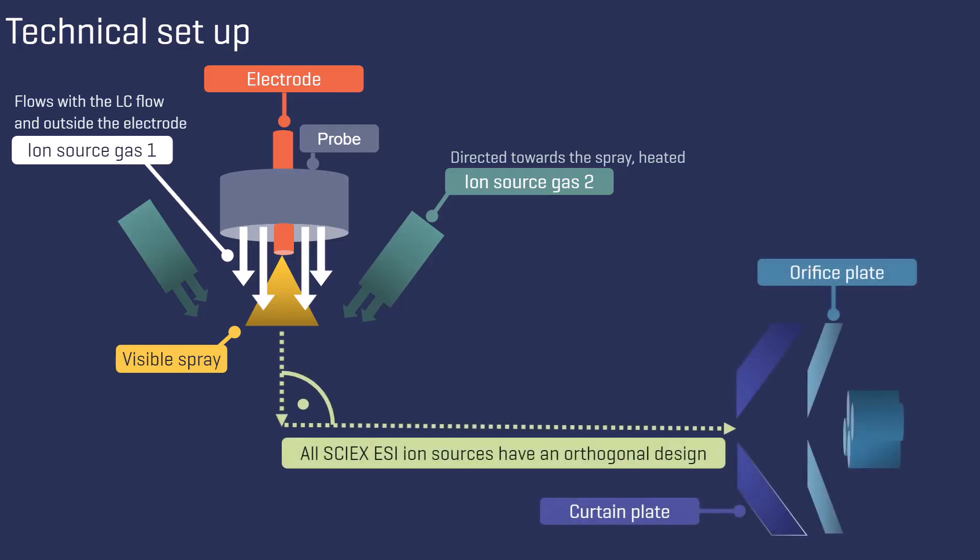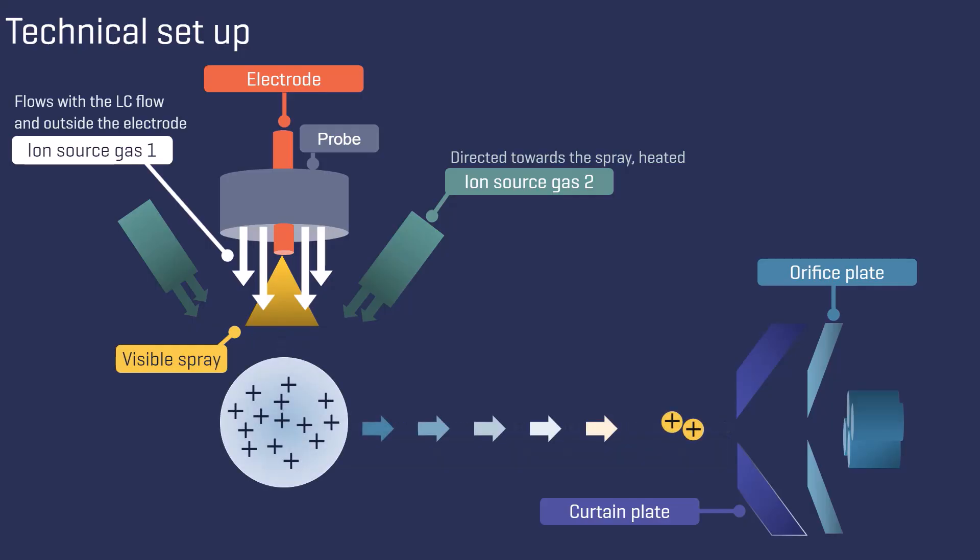All SCIEX ion sources feature an orthogonal design, where the electrode and the entrance to the mass spectrometer are positioned at a 90 degree angle to each other, as illustrated. The droplets undergo the coulomb explosions and the bigger droplets can be removed easily due to the design of the source.